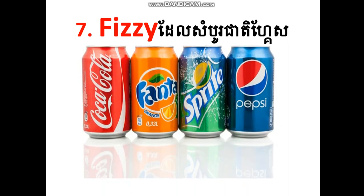Now let's see number seven — and the last one is fizzy. Fizzy. Fizzy — you can see it in Khmer. What is fizzy? Here you are — fizzy is like this. Especially when you drink drinks like that — like Coca-Cola, Fanta, Sprite, Pepsi — they all have a lot of fizzy. So don't drink it a lot — it's not good for you all. Fizzy.